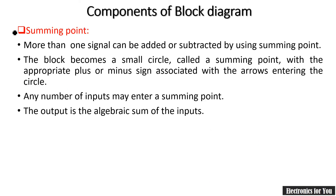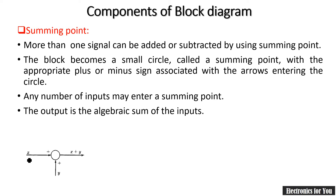The next important component is summing point. Whenever more than one signal is to be added or subtracted, a summing point is used. This summing point is indicated by a small circle, with incoming arrows and one outgoing arrow. It also consists of the proper sign — plus or minus — on the block. For example, if x is plus and y is plus, the output will be the algebraic sum x plus y.